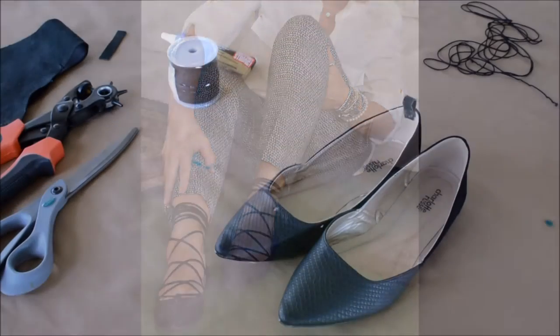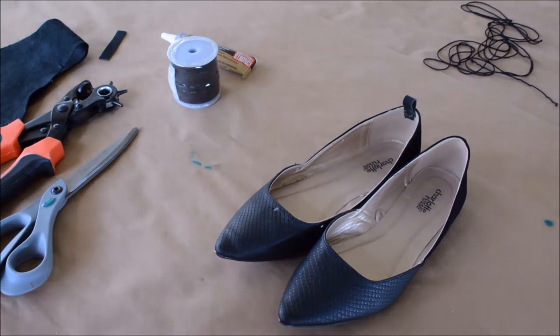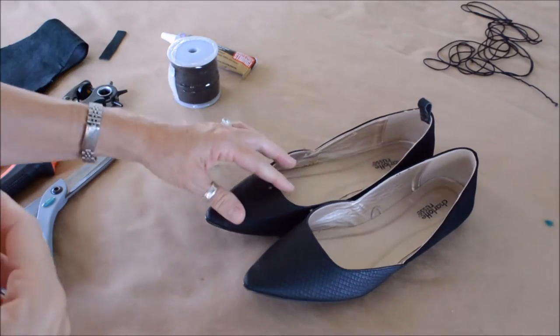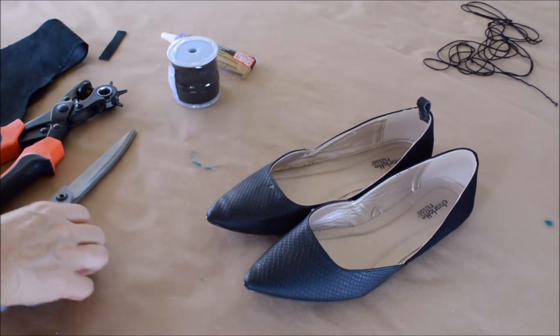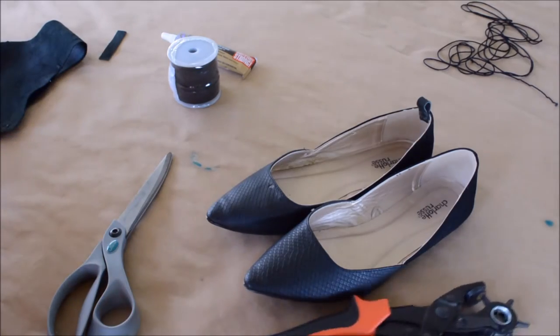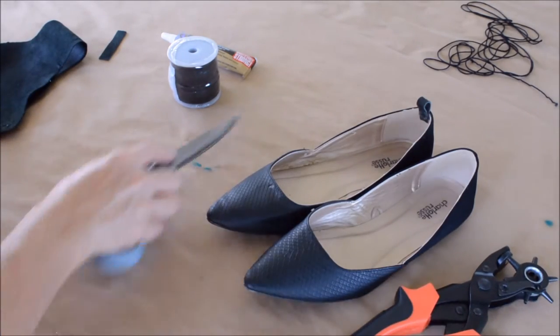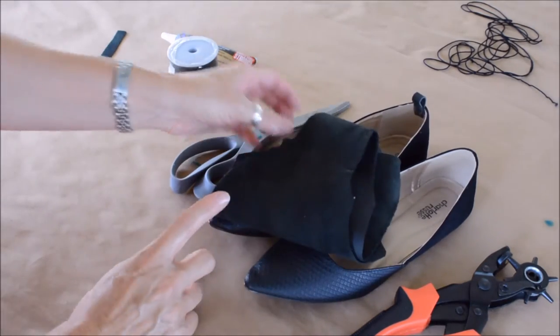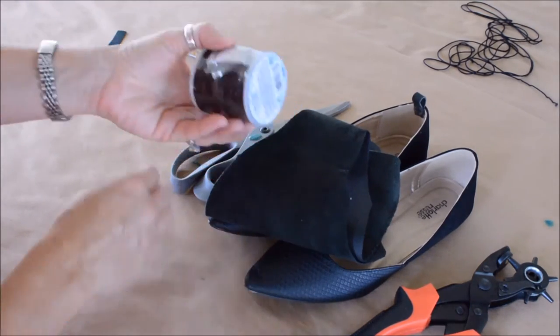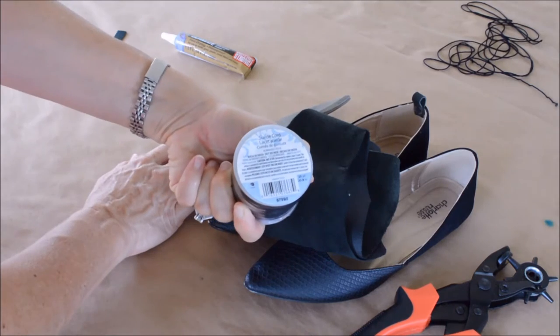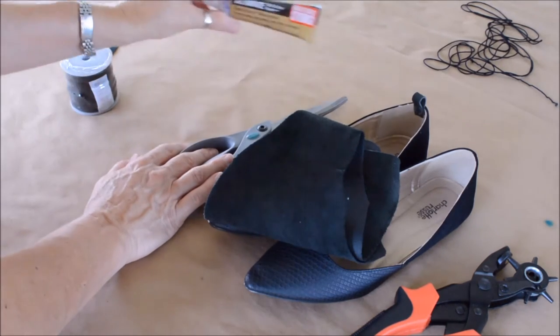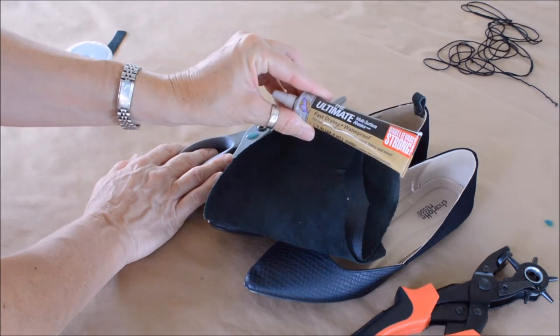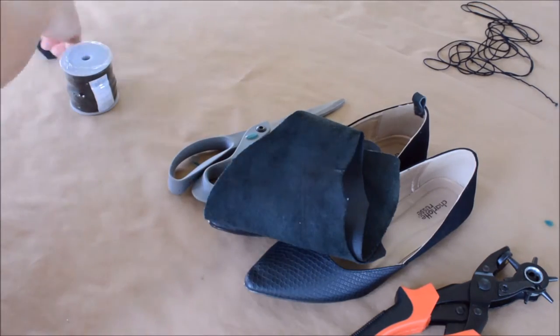First thing you want to do is get all of your supplies. I bought these shoes at Charlotte Russe about six months ago and they were sitting in my closet waiting for this. My hole punch, some scissors, some leather scrap leather I got at Hobby Lobby, some laces, suede laces I got at Walmart, and some Eileen's glue ultimate glue waterproof. That's really good glue to use.